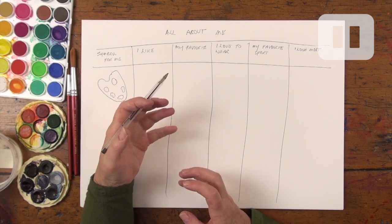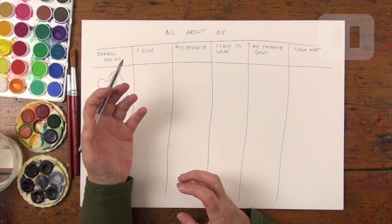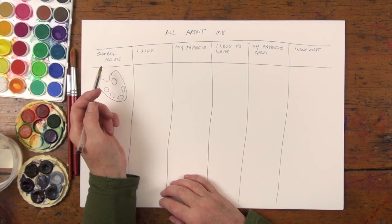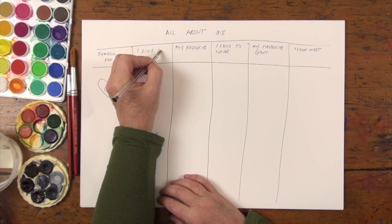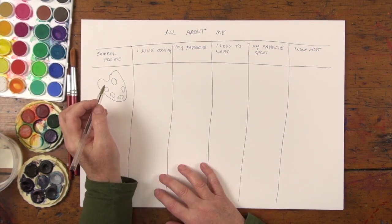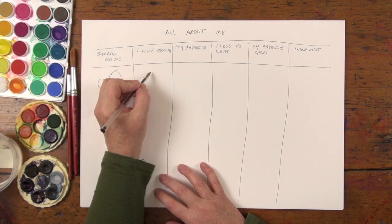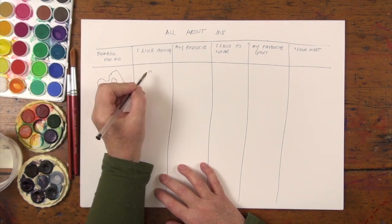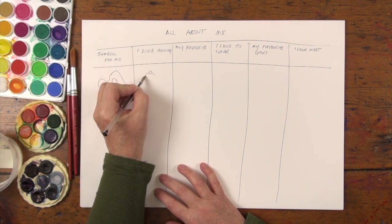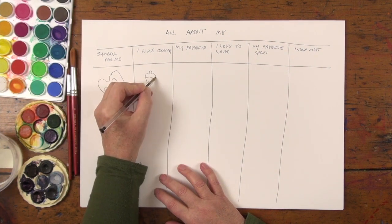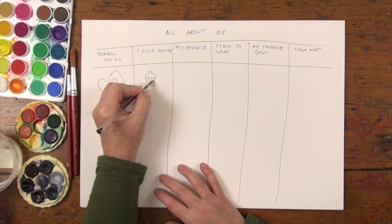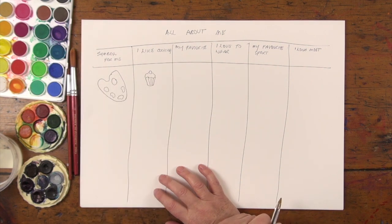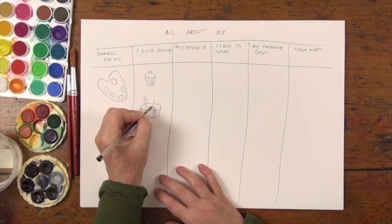For 'I like' — what is something that you like to do? I love to cook, so I'm going to say I like cooking. My obsession is cooking cupcakes, so again, a very simple line rendition of a cupcake.